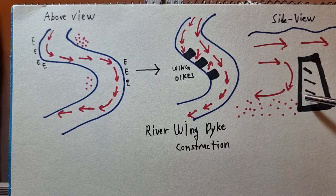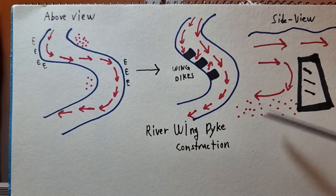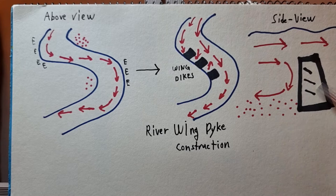The side view of the river clearly illustrates that a winged dike blocks the majority of the flow of the river, and therefore, where the water flow loses most of its energy is the site where the sedimentation and deposition of material occurs.